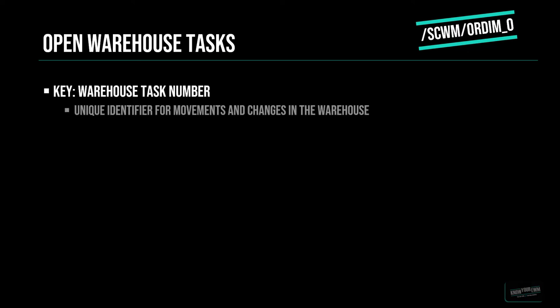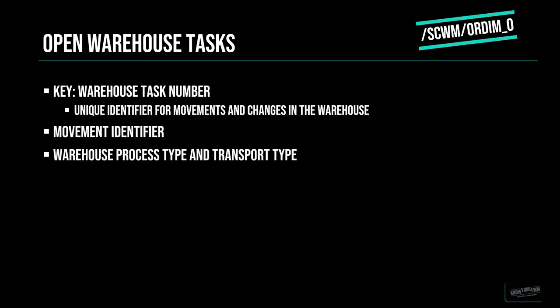The Warehouse Task Number acts as a unique identifier for all movements and changes in the Warehouse. As you already know, there are two kinds of Warehouse Tasks: product-based Warehouse Tasks and HU-based Warehouse Tasks, so we also need a database field for that information. The information about the Warehouse Process Type and transportation type are also stored in the Open Warehouse Tasks table. These fields describe what kind of process the Warehouse Task is assigned to — for example, a put-away process or a picking process.